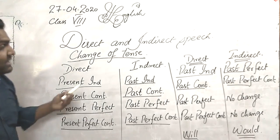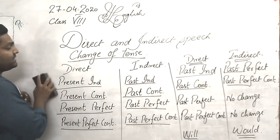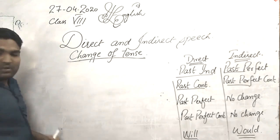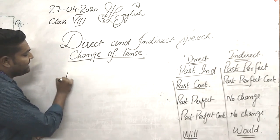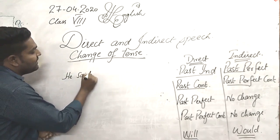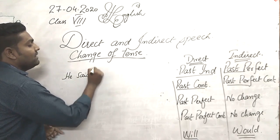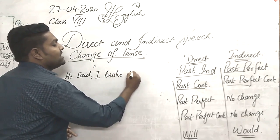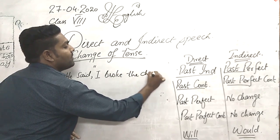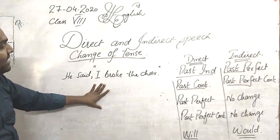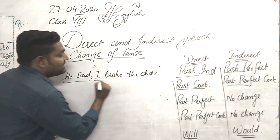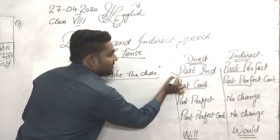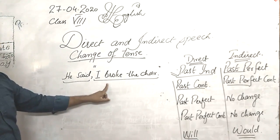Let's see how we can change a sentence of direct speech into indirect. If I write the sentence: 'I broke the glass.' In this sentence you can see the tense is in the past indefinite. The direct speech is in the past indefinite.